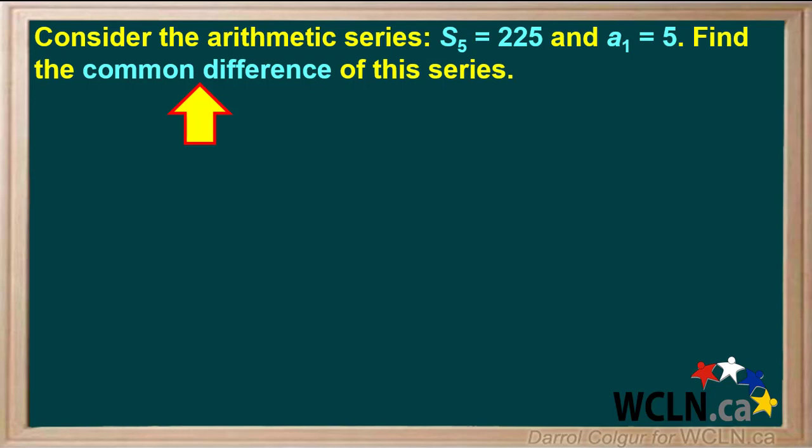Let's make a list of what we know. Because we're given the sum, S5, we know that we're adding up five terms, so N equals 5. We're also given that the sum of the five terms, S5, is 225. In addition, we're told that the first term, A1, is 5.